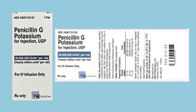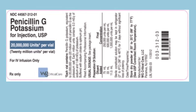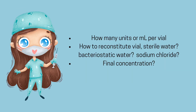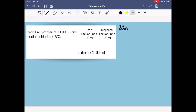Now let's look at our vial. We got lucky with this one because it actually shows us how to dilute the vial. Sometimes you have to look at the package insert or use a website to see how to reconstitute the vial. For this medication, my pharmacist wants the final concentration to be 500,000 units per ml, so we're going to reconstitute this vial with 33 ml of sterile water. Things to think about: how many units or mls per vial, whether it needs to be reconstituted and with what — sterile water, bacteriostatic water, or sodium chloride — and what the final concentration will be.